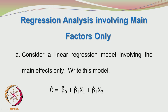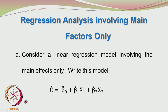Let us look at the regression analysis involving the main factors only. We will write down the model: the predicted color is given in terms of beta-0-hat plus beta-1-hat x1 plus beta-2-hat x2. Beta-0-hat is a very important term in the regression model — it gives the value of the concentration when both x1 and x2 are 0. There is more to this beta-0-hat which we will see in the coming slides.